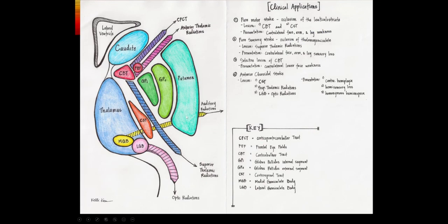Looking at a diagram of the internal capsule: in the posterior limb we have the corticospinal tract, and at the genu we have the corticobulbar tract. Ischemia involving the posterior limb gives contralateral arm and leg weakness, while involvement at the genu gives facial weakness. Remember, this is an upper motor neuron facial weakness, so only the lower face is affected.